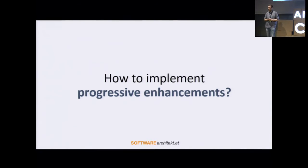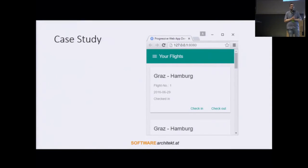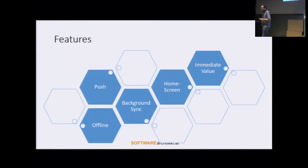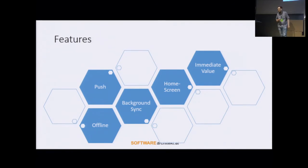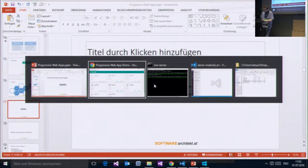The question is now how to implement such progressive enhancements. To answer this, I have prepared a case study. This case study consists of a very simple application using Angular Material about flight bookings — it displays bookings for flights you have created. This case study allows for offline capabilities, push notifications, background synchronization, installation to the home screen of your mobile device, and gaining immediate value. You can start it and get immediate value without waiting for something to be downloaded.